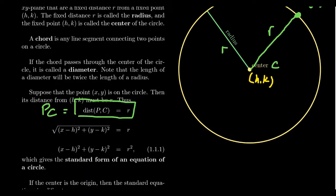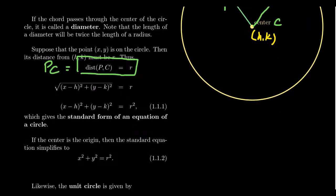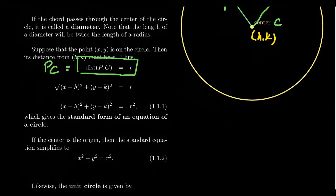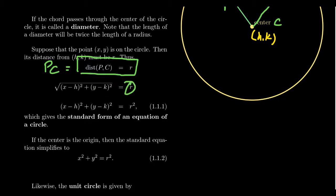If we apply the distance formula to these coordinates, we get the difference of the x coordinates — x minus h — squared, plus the difference of the y coordinates — y minus k — squared, and then take the square root, which equals r. This is just the distance formula. If you square both sides, we get the so-called standard form.